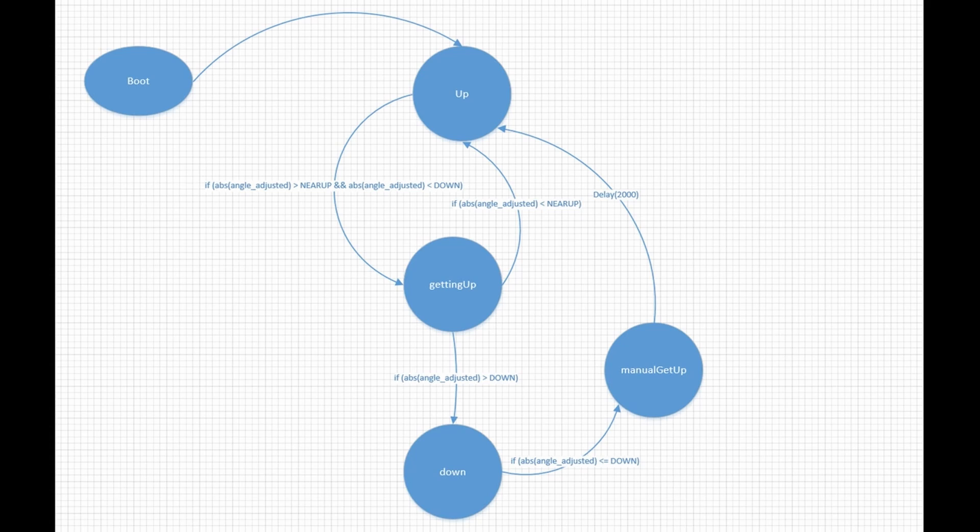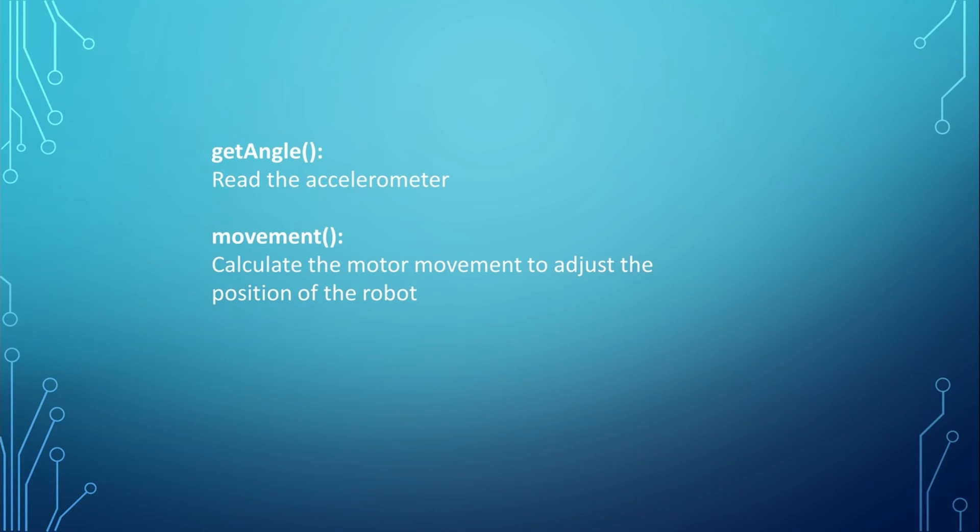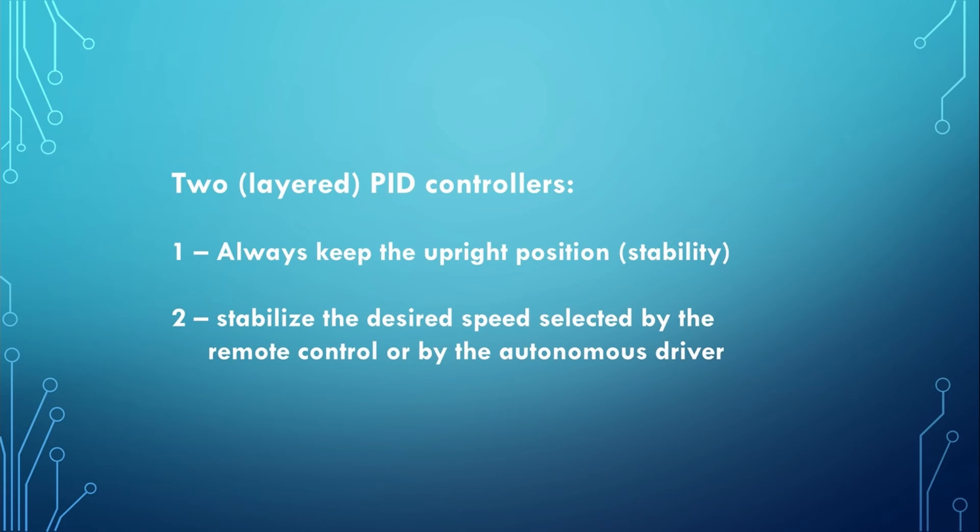The status getting up is currently not used. Here you could change the PID controller factors for a more aggressive behavior. The main work is done in the two subroutines GETANGLE and MOVEMENT. GETANGLE gets the angle from the accelerometer and MOVEMENT consists of two independent PID controllers. One to keep the upright position and the other to control the speed. This part of the code is still based on the work of Jose.